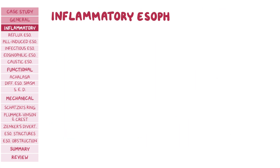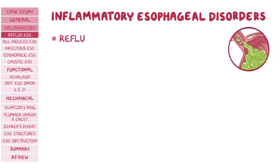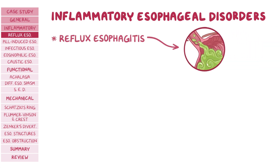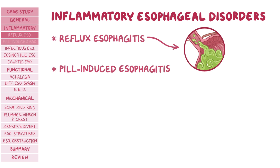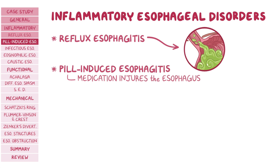Inflammatory esophageal disorders, also known as esophagitis, are characterized by inflammation of the esophageal lining and, based on the cause, are subdivided into several types. First, there's reflux esophagitis, associated with the reflux of gastric acid from the stomach back into the esophagus. Alternatively, there's pill-induced esophagitis, where a medication injures the esophagus, causing inflammation and possible upper GI bleeding.